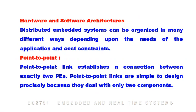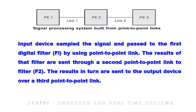Hardware and software architecture: a distributed embedded system can be organized in many different ways depending upon the needs of the application and cost constraints. In a point-to-point topology, a point-to-point link establishes a connection between exactly two processing elements. These links are simple to design precisely because they deal with only two components.